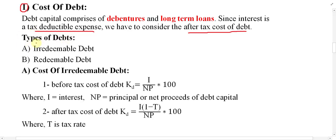Regarding types of debts, we divide them into two parts: irredeemable debt and redeemable debt. The cost of irredeemable debt — what is irredeemable debt? Irredeemable debt means the company issued a bond or debenture in the market but does not promise to repurchase it back after a particular number of years, such as five or ten years. It does not mention a fixed time period for the loan.